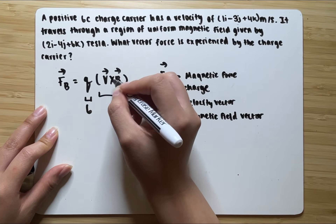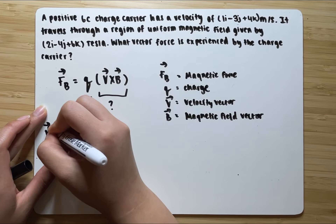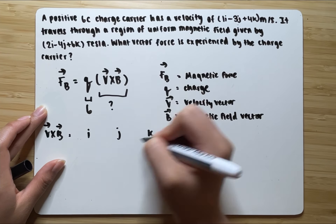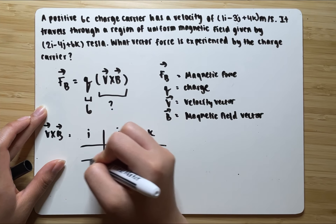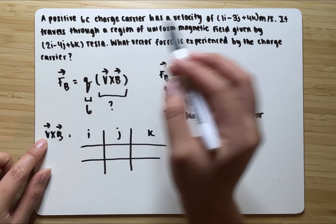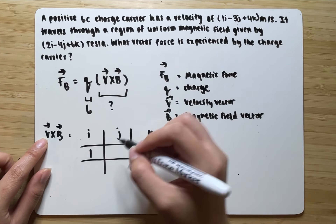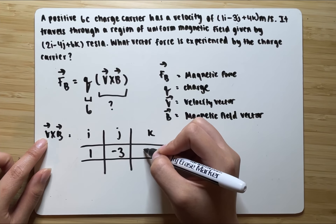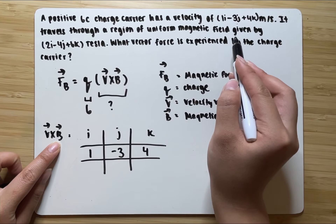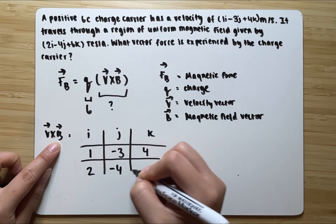We need to find V cross B. The cross product means we need to find the i, the j, and the k components. First, write down the i, j, and k for the velocity vector: the velocity vector is 1i minus 3j plus 4k. For our magnetic field vector B, the magnetic field is given by 2i minus 4j plus 6k.